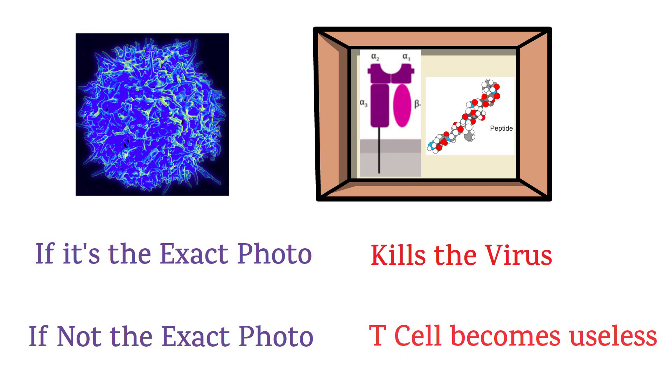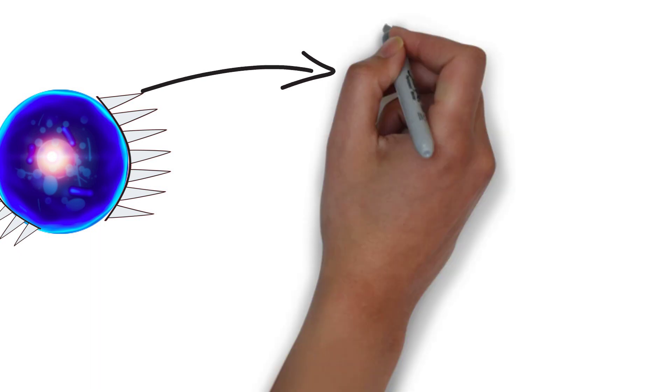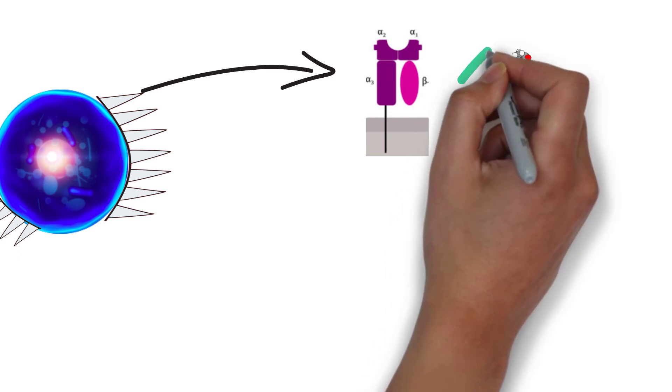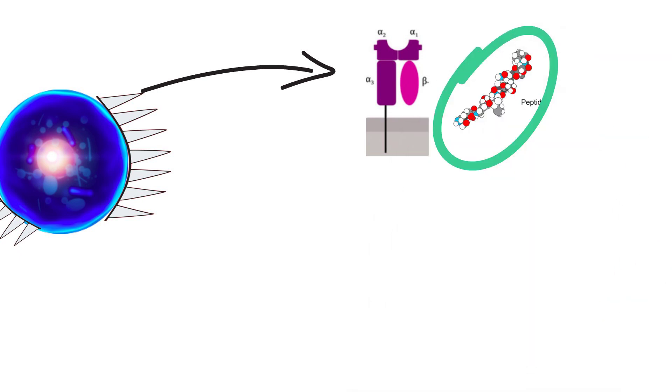Let us suppose all healthy cells display unique flags, and on these unique flags there is a unique code. These flags are 10 in number. Please write it down. The unique flags I'm talking about is MHC 1 complex, and the code is the peptide that is what you get after processing this spike protein in the case of coronavirus.